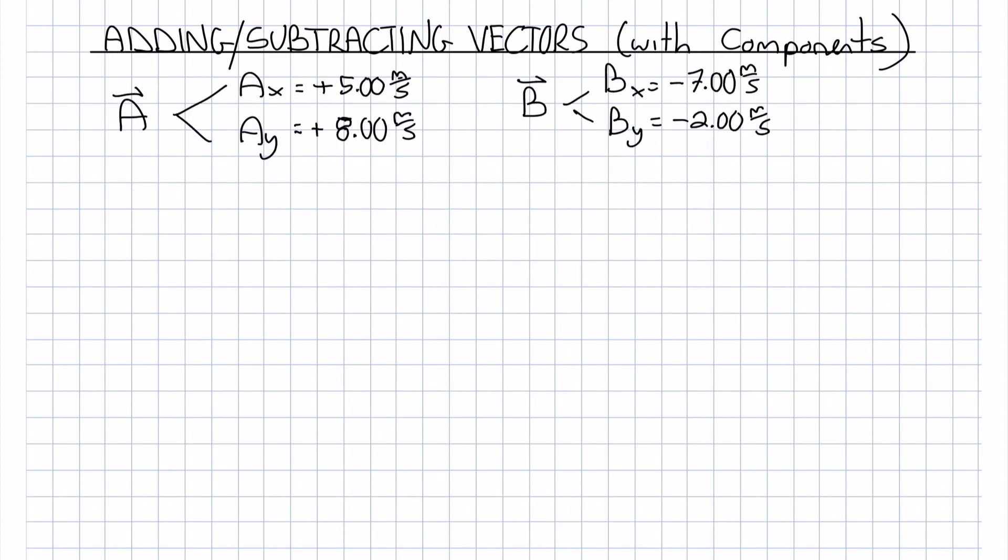So let's take our two vectors from the previous example, A and B, show them with their components as I've done here on the screen, and let's add these together to give a resultant vector C.